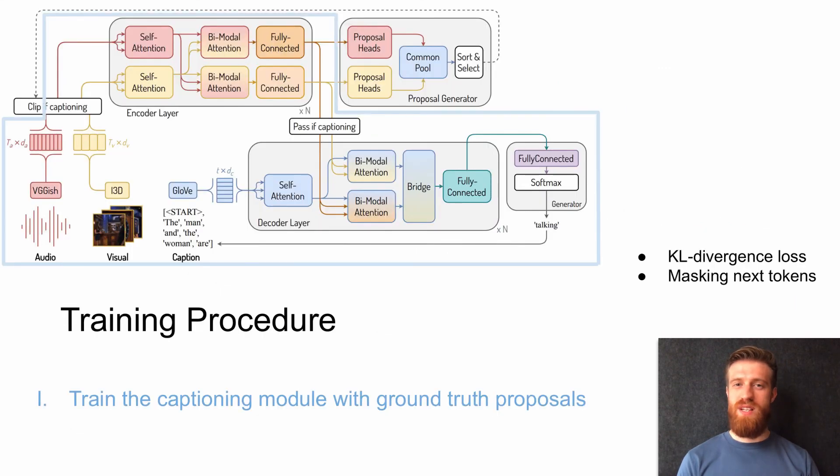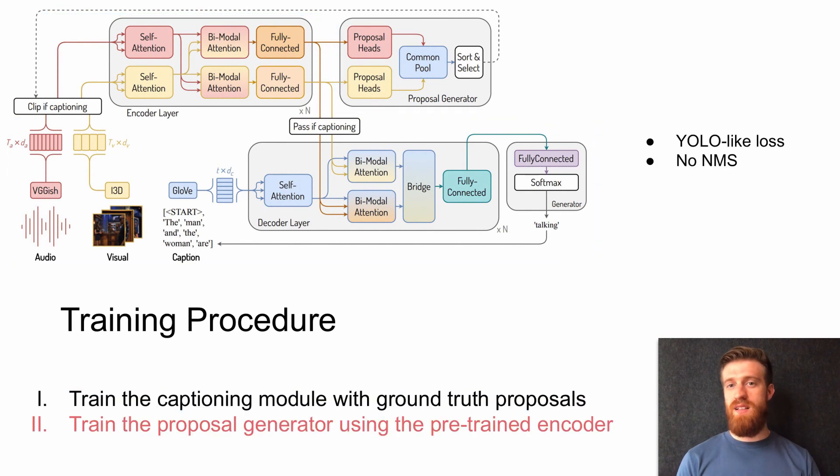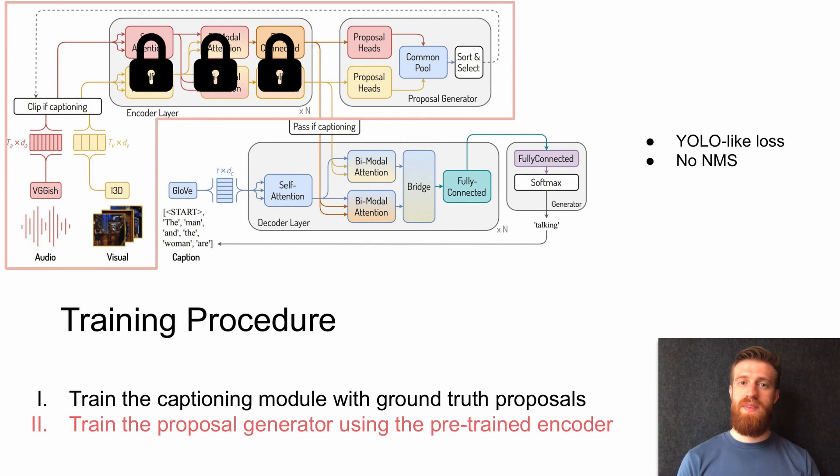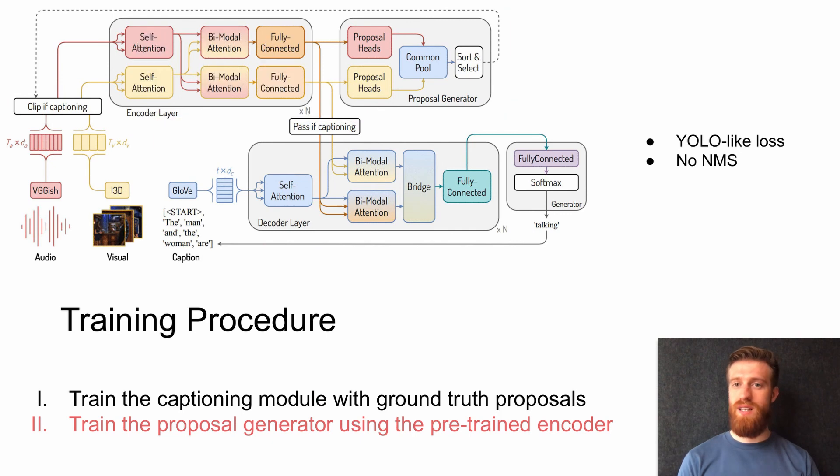We train our model in two stages. Firstly, we pre-train the captioning module with the ground truth proposals. To train it, we employ KL divergence loss. We also mask out the future caption tokens. Secondly, we freeze the bimodal encoder and use its weights to train the bimodal proposal generator. For that, we use a YOLO-like loss. We avoid using non-max suppression for efficiency and to allow events to be dense.